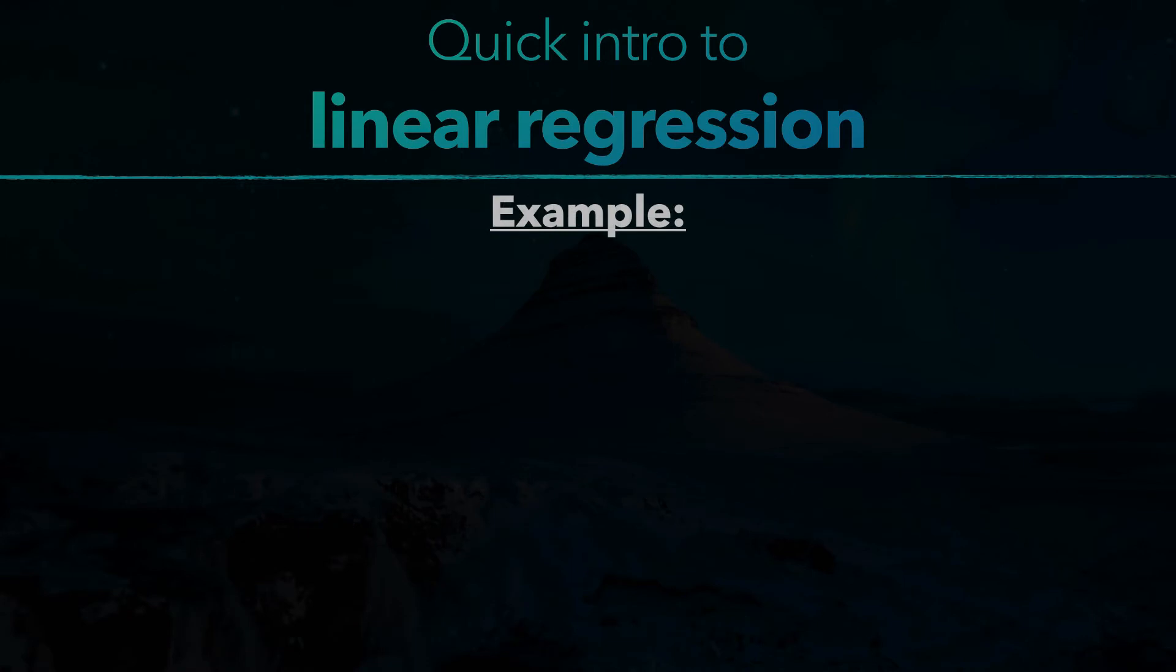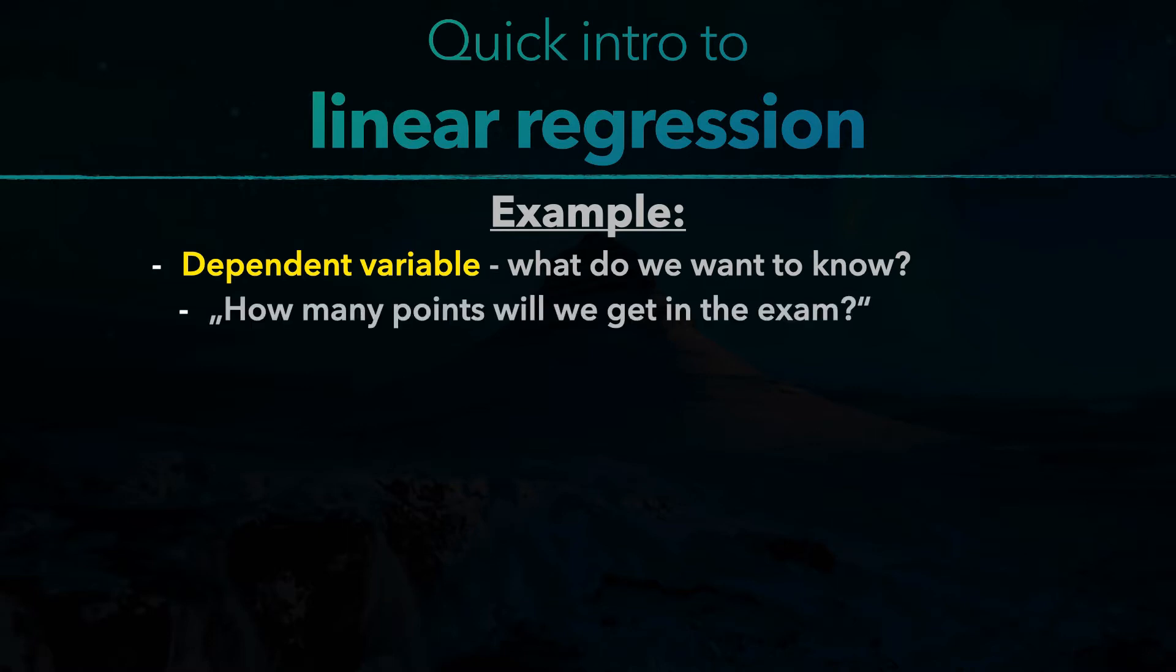Let's look at a quick example. The dependent variable is what we want to know. And what we all want to know is, how many points will we get in the exam. We will refer to this as y. The independent variables are what we use for our guess. In this case, we will use how much we like the subject,